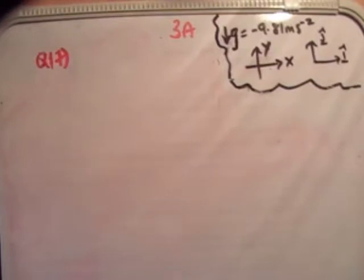It reads: a particle is projected with initial velocity 12i hat plus kj hat meters per second from a point on a horizontal plane. When its horizontal displacement is 30 meters, it is 9.375 meters above the plane.